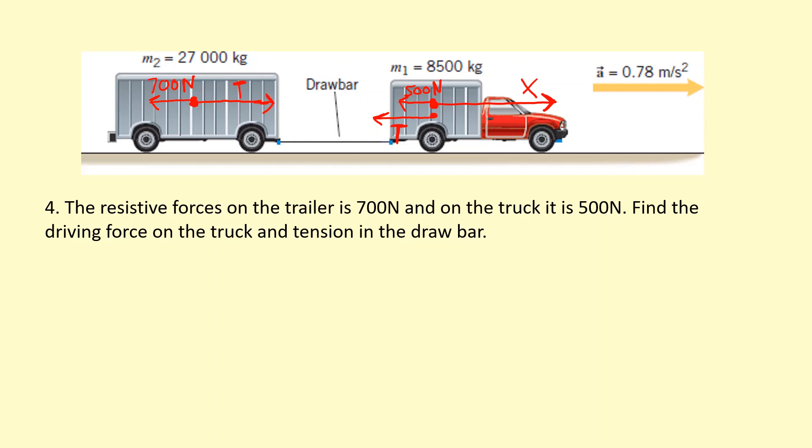Because there's two unknowns with the truck, I'm going to start with the trailer. So I'm going to write Newton's second law, apply it to the trailer. So the resultant force we know is going to be towards the right. So tension is going to be bigger than the 700 N force. And that's going to equal its mass, 27,000 of the trailer, times acceleration. Which in this case they both have the same acceleration, otherwise the drawbar would either snap or come loose. So tension in this case if you solve this carefully you get 21,760 N.